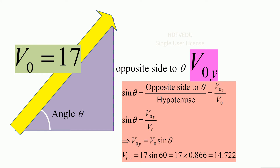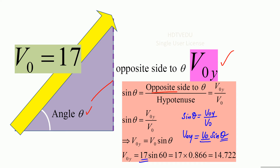So those are the x and y components of the velocity vector. The angle theta is opposite to V0y, so sine theta equals opposite side divided by hypotenuse, which gives V0y divided by V0. Therefore V0y equals V0 sine theta. V0 is 17, theta is 60 degrees, and sine 60 is 0.866. Multiplying 17 and 0.866 gives 14.722.